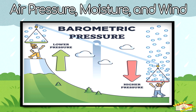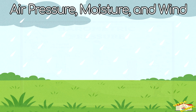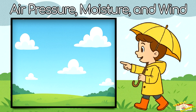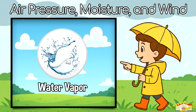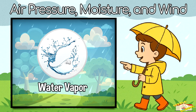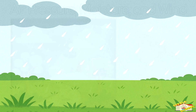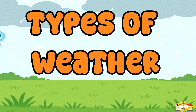Air pressure is how much weight the air presses down on Earth. It changes when air warms or cools. Humidity is the amount of water vapor in the air. Moist air can lead to clouds and rain.